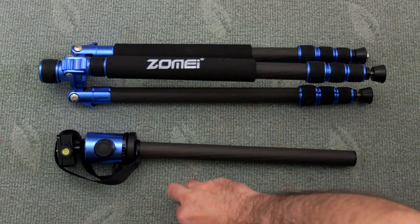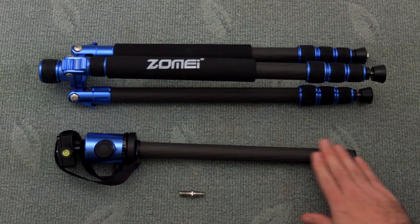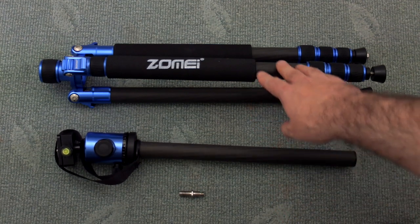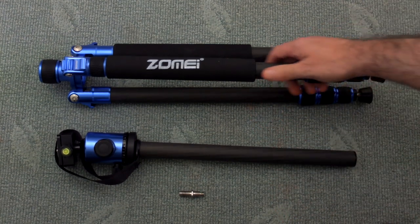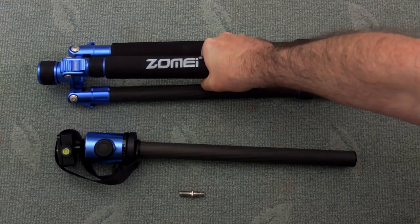For the monopod, it's a slightly different procedure with this. You have to use the double-sided threaded bolt and you unscrew the padded leg which has the logo on it, or the maker's name rather.